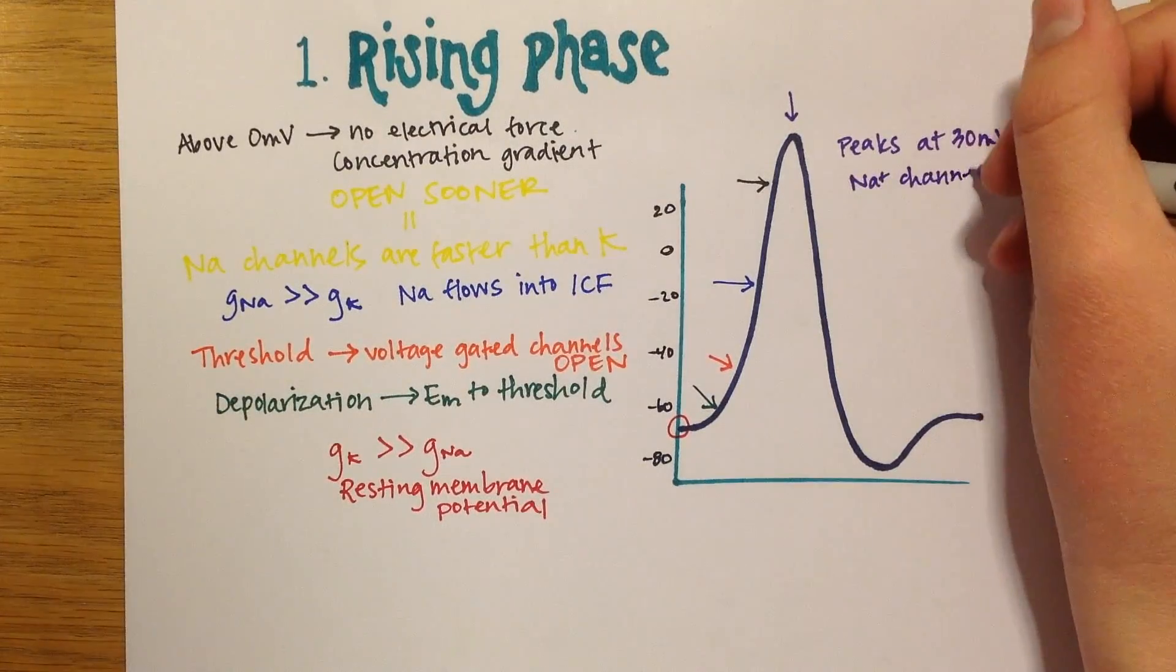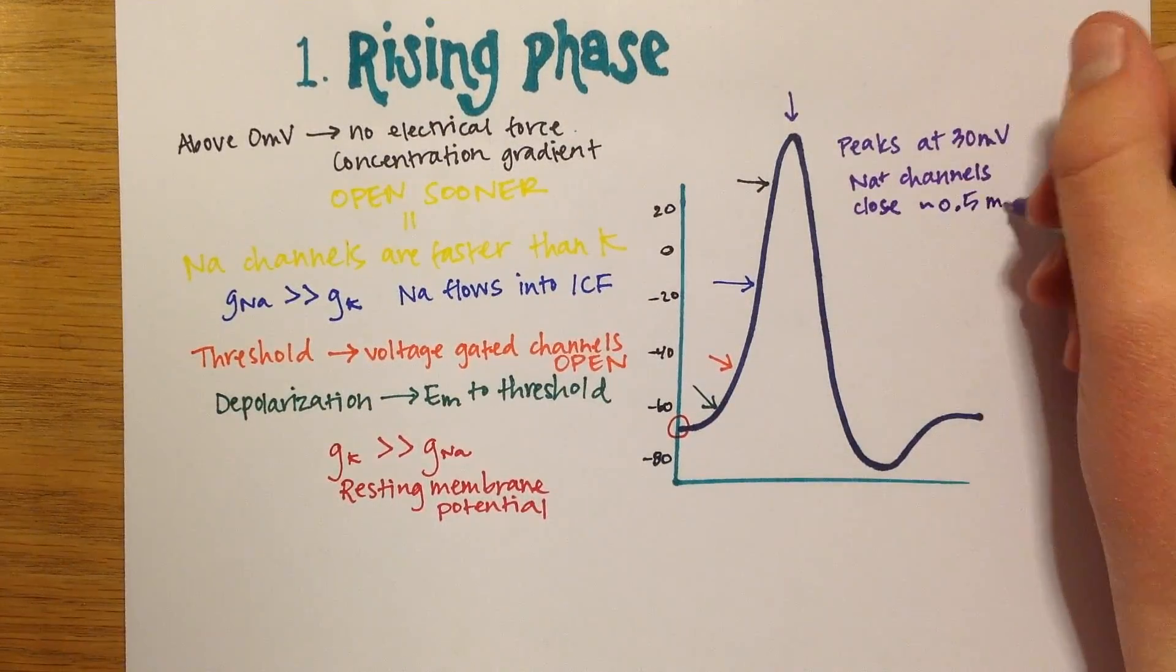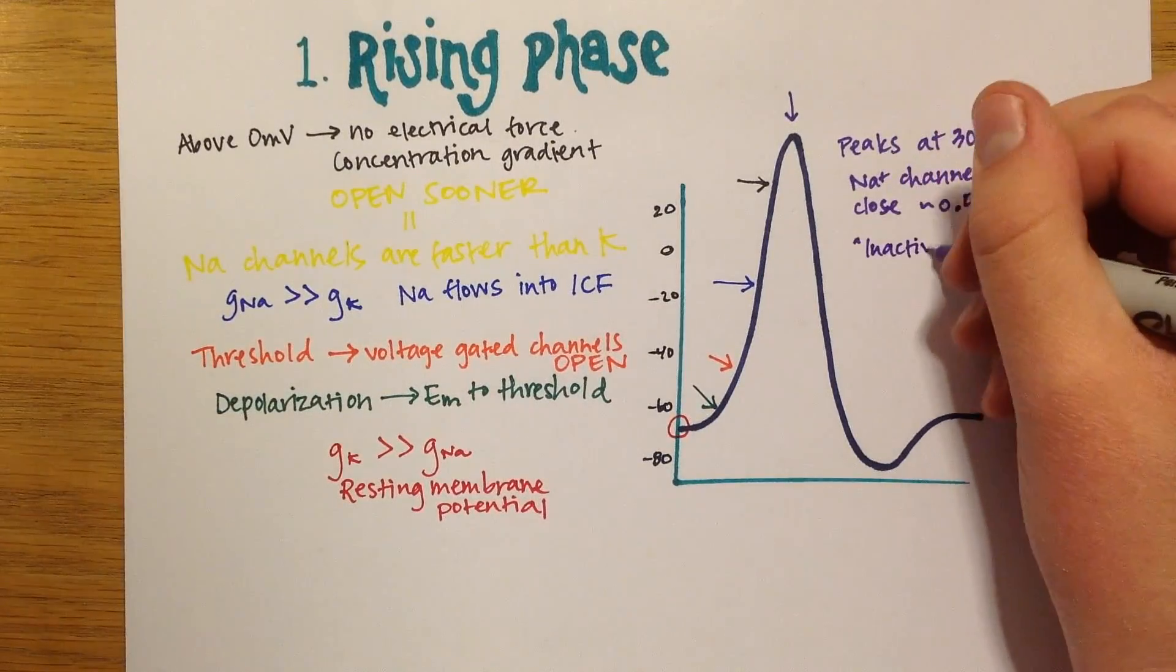The action potential peaks at about 30 millivolts because sodium channels automatically start to close within about 0.5 milliseconds from activation.